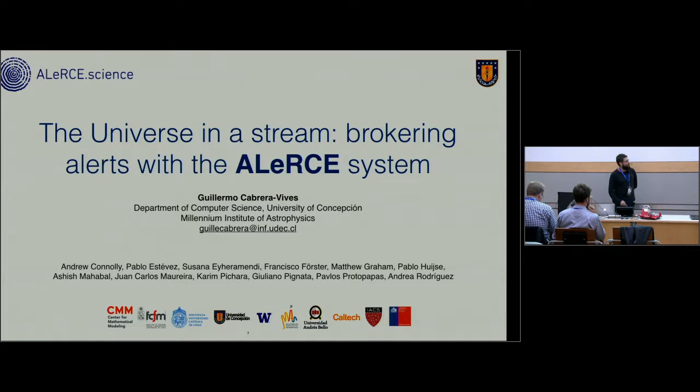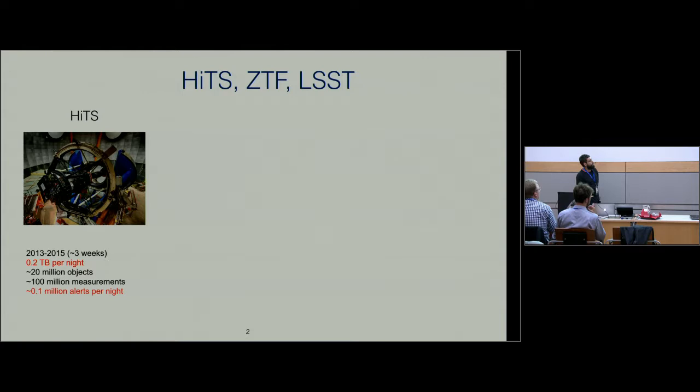This all started in 2013 when we used DECAM data to create a survey called High Transient Survey. The idea was to observe the sky during five nights and we were obtaining 0.1 million alerts per night. We wanted to detect supernovae in real time. In 2013 we got data but not a real-time transient classification model. But in 2014 and 2015, we were able to detect supernovae three minutes after we saw their explosion.